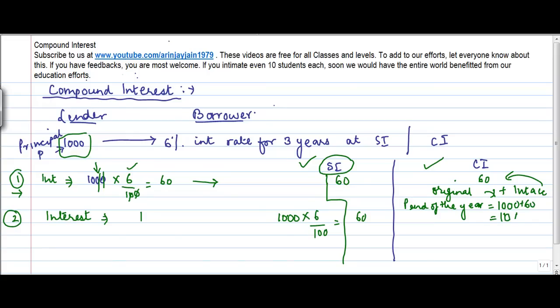So the principal in this case will become, instead of 1000, 1000 + 60 here. So the change is that the principal amount changes in case of compound interest.